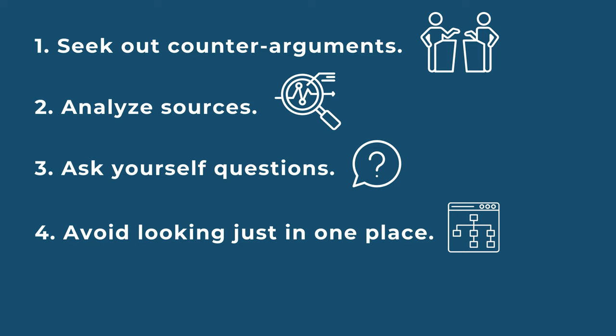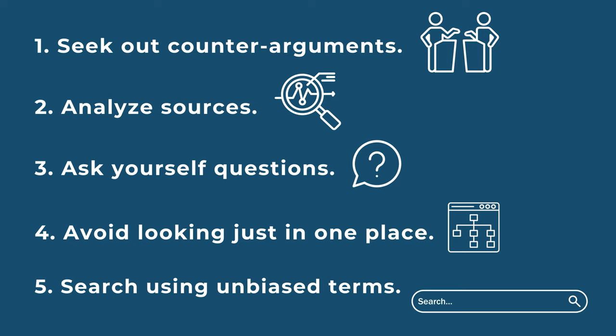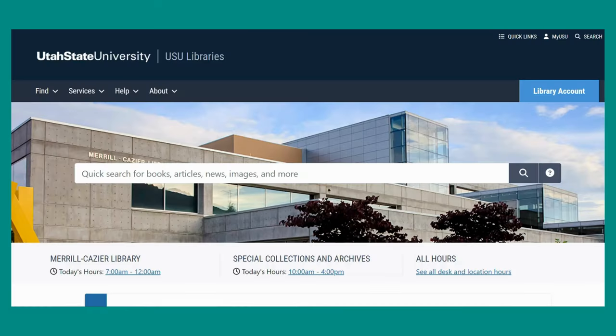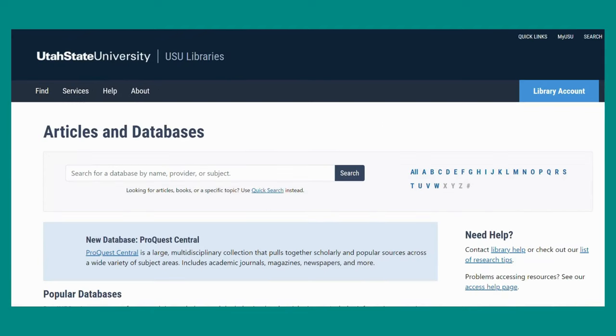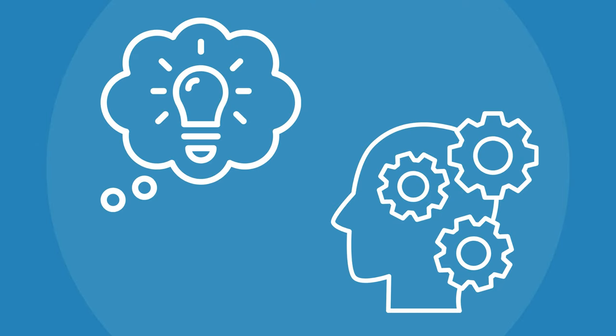Avoid going directly to Google or a single website for all of your sources. Use a variety of unbiased search terms during your search, and don't forget to utilize library databases to search for a wide range of resources. For successful research, think critically and draw informed conclusions based on diverse sources.